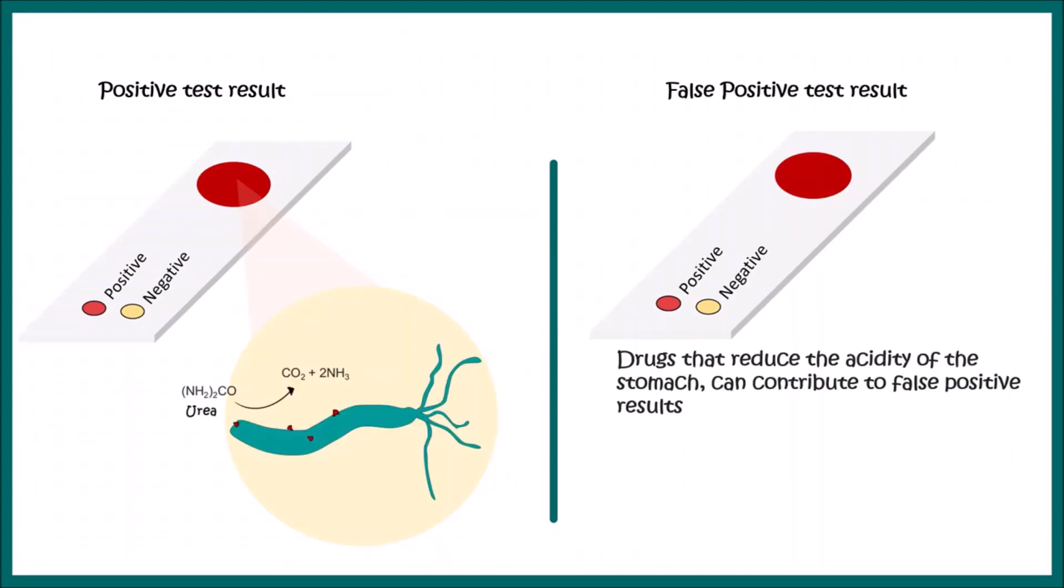Let's try to understand false positive results. Sometimes you see red color formation, but it doesn't always ensure your test result is positive. If you're consuming a drug that reduces the acidity of the stomach, that can possibly contribute to false positive results.